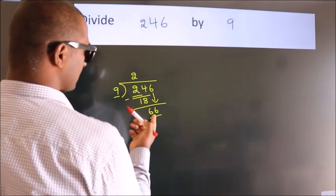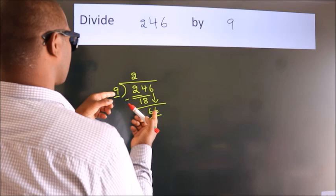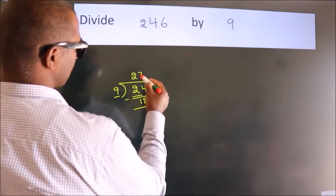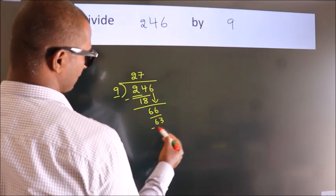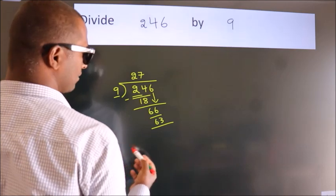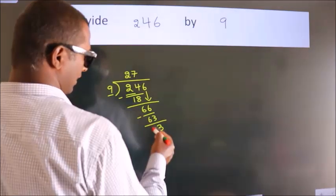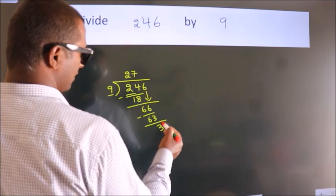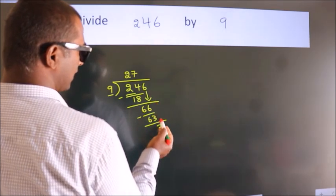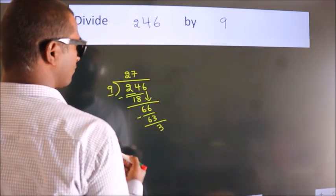A number close to 66 in nine table is nine sevens, 63. Now we subtract, we get three. After this, no more numbers to bring it down, so what we do is...